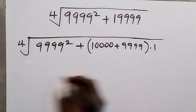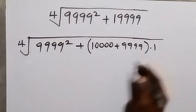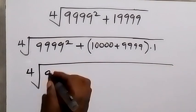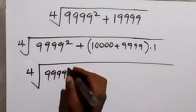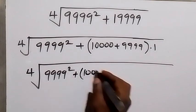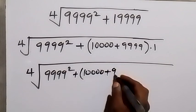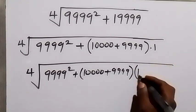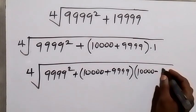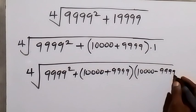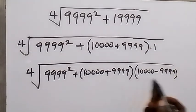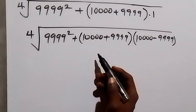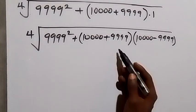This one can be written as 10,000 minus 9,999. So we now have the fourth root of 9,999 squared plus 10,000 plus 9,999, then multiplied by — instead of writing one, we write 10,000 minus 9,999. From here we understand this is a difference of two squares factorization, which we write as 10,000 squared minus 9,999 squared.